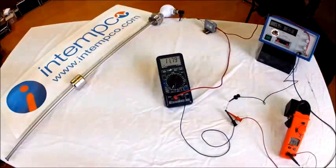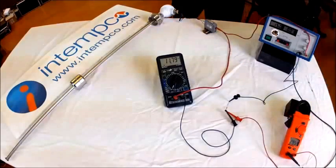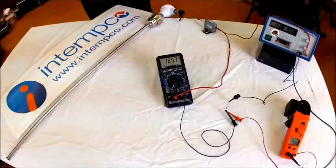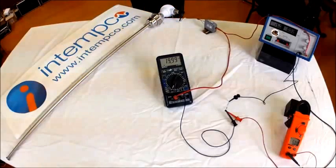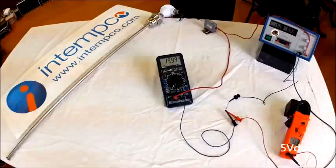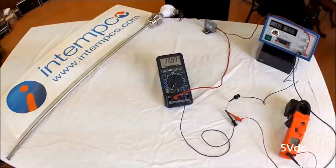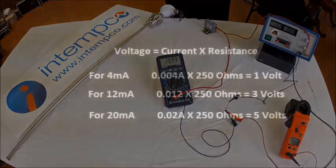If we change the position of the float to the top, it will indicate 20 milliamps. So 20 milliamps or 0.02 amps times 250 ohms equals 5 volts.